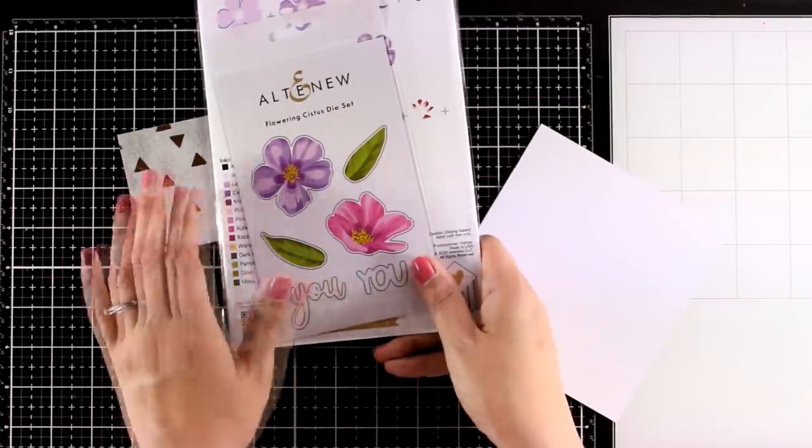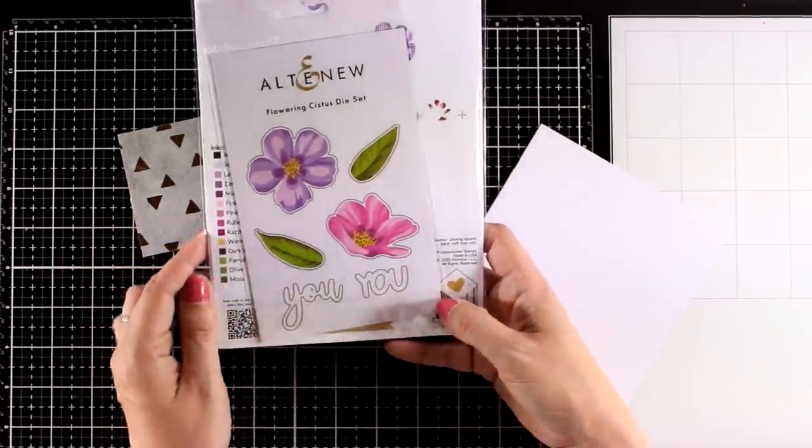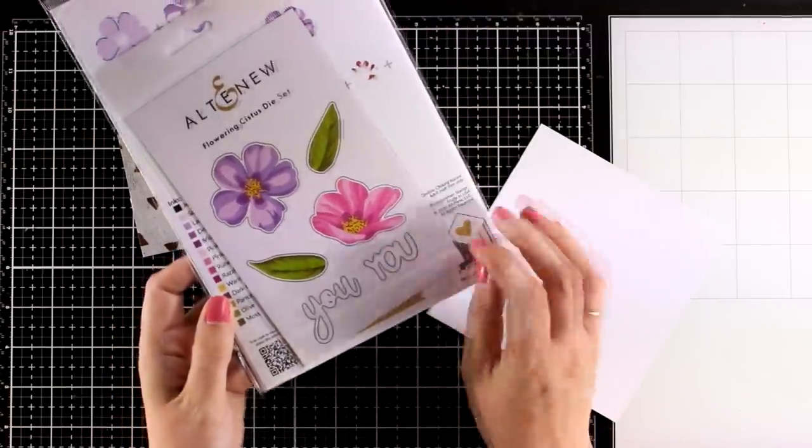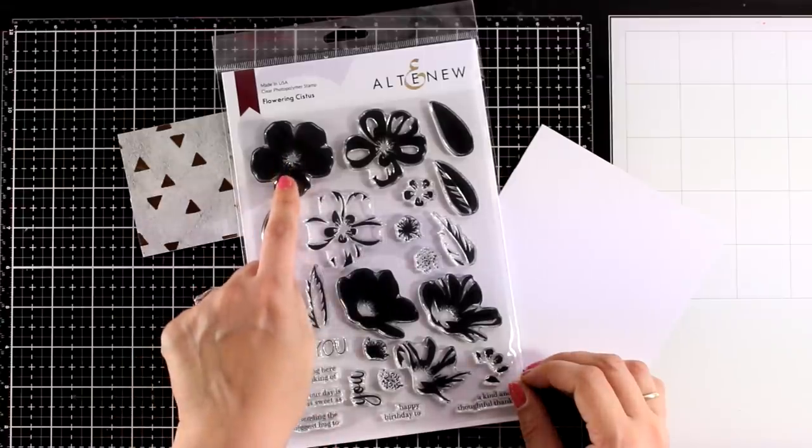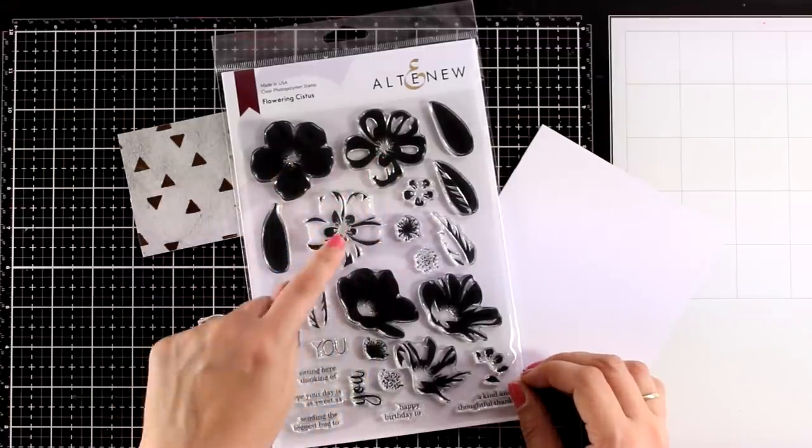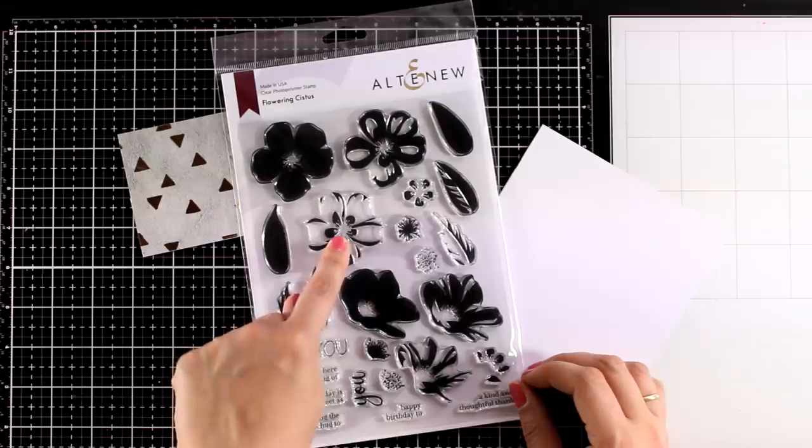Now you can work with any color for this card but you will see that I'm going with white and gold just for a completely different look. This stamp set is a layering stamp set so it gives you two flowers and every one of the flowers has four different layers.